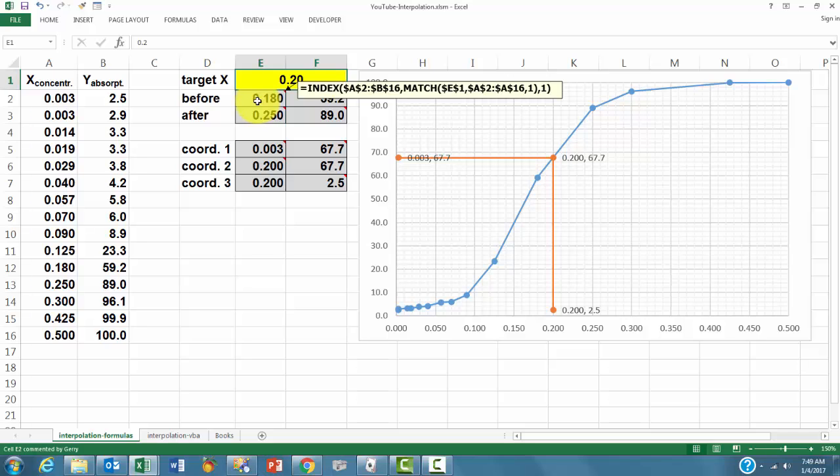We want to find E1, which is 0.2, the value we want to locate in range A2 to A16. That is the row position. The column position is 1. The INDEX function wants to find the previous value, closest previous value in the range, 0.18, since there is no position for 0.2 here.